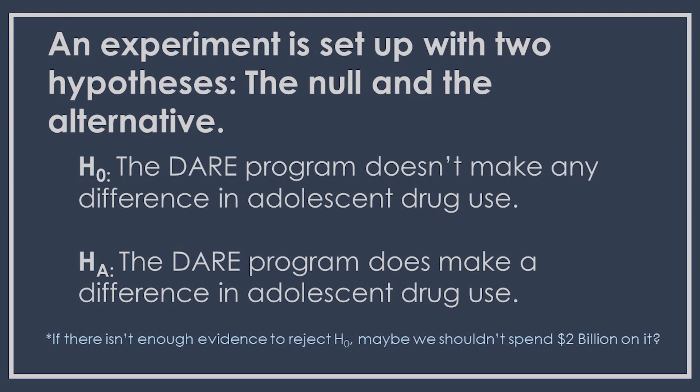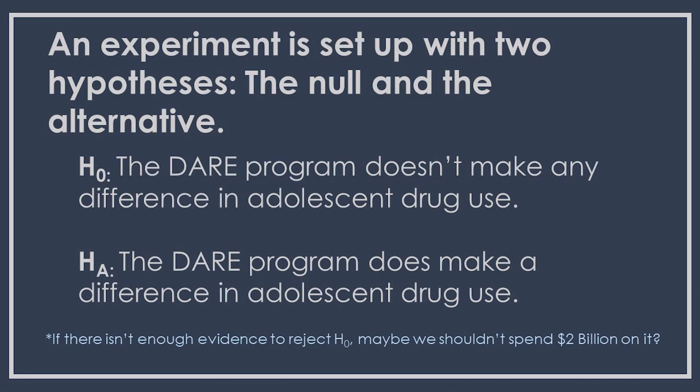The alternative hypothesis would be that the DARE program does make a difference in adolescent drug use. When we approach our experiment, we're not going to test the alternative — that would mean assuming the alternative is true and seeing if it fits. Because of parsimony, we want to use the null hypothesis; that's our status quo, our default. If the null hypothesis is just as good an explanation of the pattern of results we see as the alternative, then we don't need to bring in the alternative — we can just stay with the status quo.